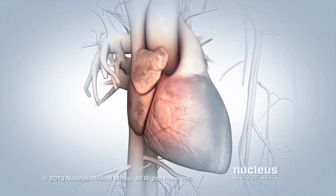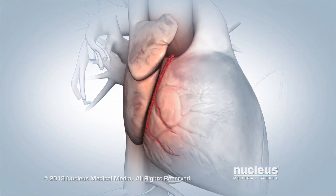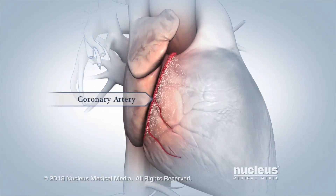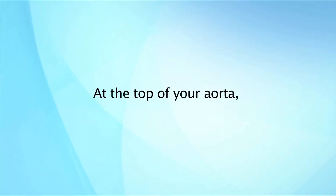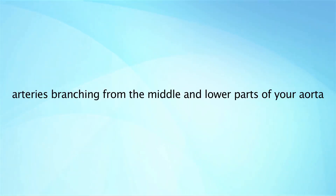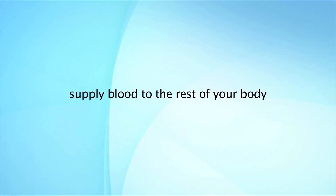The first branches off your aorta are the coronary arteries, which supply your heart muscle with oxygen and nutrients. At the top of your aorta, arteries branch off to carry blood to your head and arms. Arteries branching from the middle and lower parts of your aorta supply blood to the rest of your body.